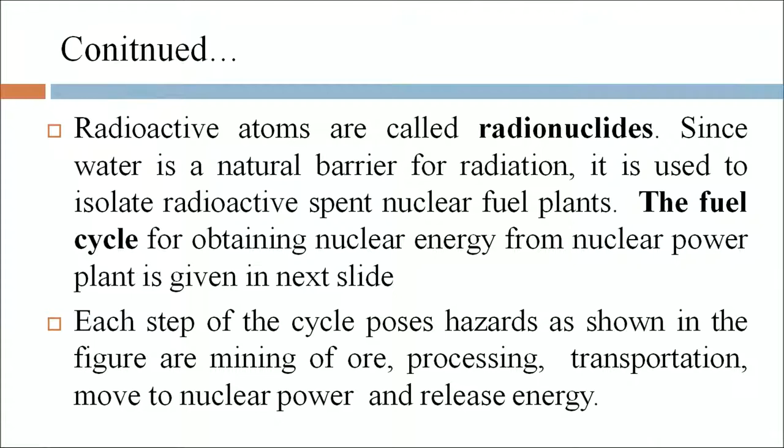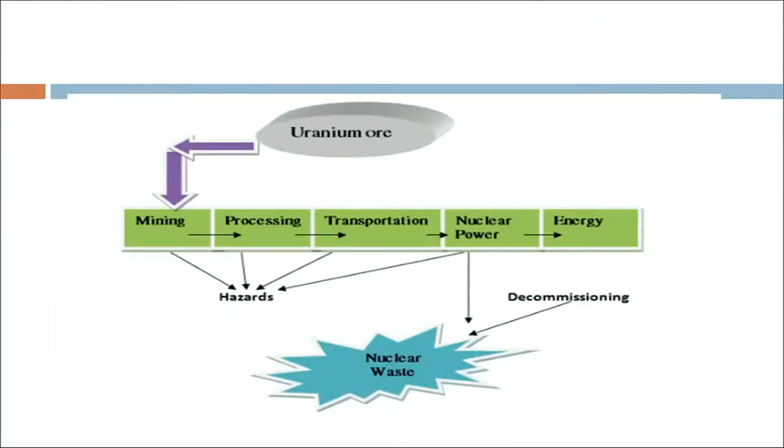Each step of the cycle possesses hazards: mining of ore, processing, transportation, and nuclear power to release energy. The nuclear fuel cycle begins with mining of uranium ore from underground mines. The ore is crushed into sand and concentrated using a solvent to produce yellow cake. It is then turned into fuel pellets packed into rods, which are inserted into the core of a reactor undergoing nuclear reaction under controlled conditions. The reaction produces tremendous heat, which boils water to make steam, and the steam turns a turbine to produce electricity.